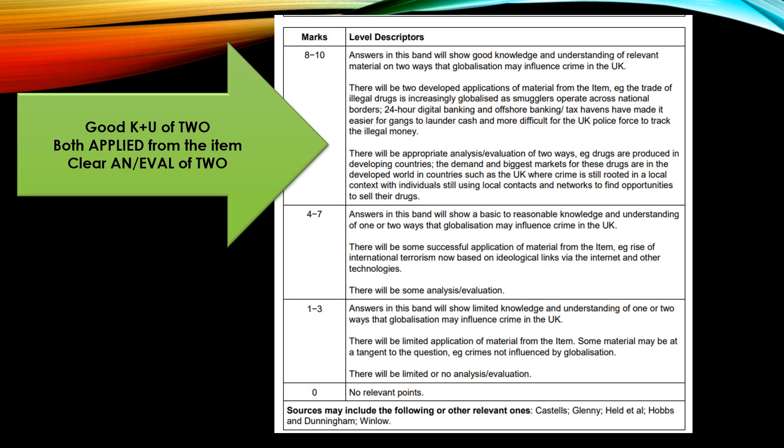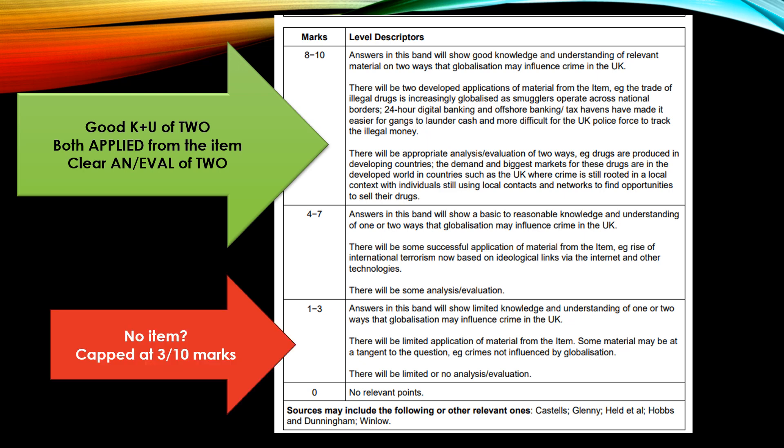Checking the mark scheme: to enter the top band, you must have good knowledge of two ways that globalisation has influenced crime in the UK, two developed applications from the item, appropriate examples, and clear analysis and/or evaluation of both ways. If you do not use the item at all — even with really good knowledge — if it has not been developed from the hook in the item, you are not going to get above three marks.